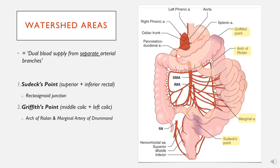The second point is Griffith's point, at the splenic flexure where the transverse colon meets the descending colon. There is a structure called the arch of Riolan, which is a blood vessel running along the colon. The middle colic artery, a branch of the SMA, supplies the middle of the colon, then forms an anastomosis with the left colic artery, a branch of the IMA. The entire vessel running around is called the marginal artery of Drummond. Griffith's point and Sudeck's point refer to the actual bowel; the arch of Riolan refers to the specific part of the marginal artery of Drummond.